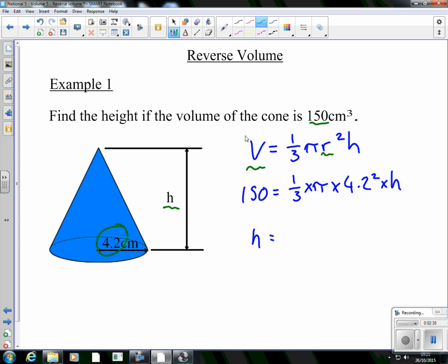Now, your problem and your issue is being able to rearrange it so that you have h equals. You want to find out what h is, you need to have a formula that tells you what h is. All you have there, in that second line, is a big row of multiplies by h. To cancel out a multiply, we all know this, we've done it in National Four, we've done it in probably S1 and 2 as well. So all we need to do is divide. So it's going to be that 150 divided by all of that, 1 third, multiplied by pi, multiplied by 4.2 squared.